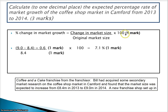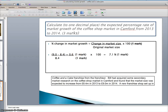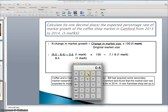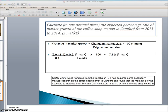It's really important to put in all the lines of working and to write down the actual calculation in words before you put the numbers in. Let's double check on the calculator: 0.6 divided by 8.4 times 100 comes to 7.142. The 7.14 is closer to 7.1 than to 7.2, so we finish with 7.1 correct to one decimal place. If you had put 7.2, you would probably have lost that last mark but still picked up two out of three. And that's how you calculate a change in the size of a market.